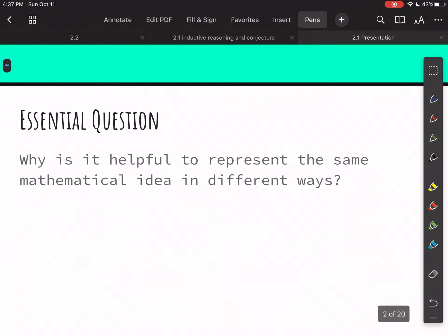Hey, I want to just throw out an essential question here. Probably have you comment on this one. This one says, why is it helpful to represent the same mathematical idea in different ways? So we've been starting to see that math can be represented in multiple different ways. But I want you to think about why that's helpful. And there's not just a right or wrong answer here. Just your opinion on it.